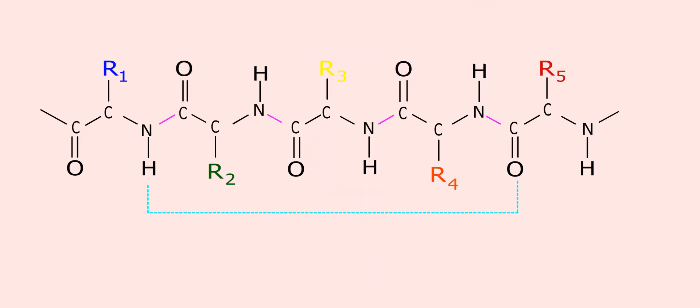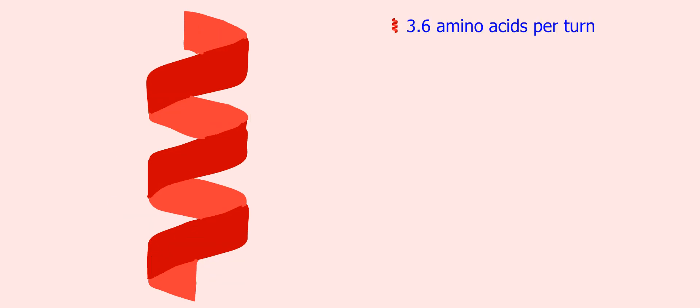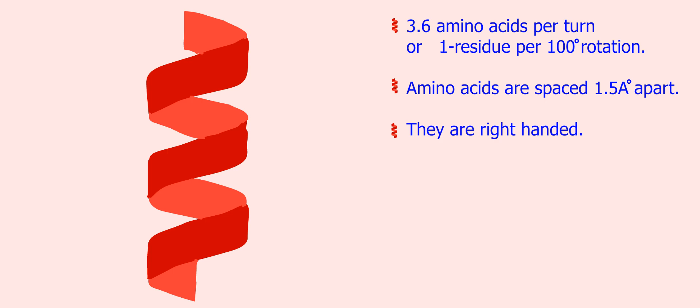Alpha helix. The alpha helix secondary structure is formed through hydrogen bonding. These hydrogen bonds connect the carbonyl oxygen of one amino acid residue to the nitrogen of a peptide bond four amino acids away. There are approximately 3.6 amino acids per turn in each alpha helix, or one residue per 100 degrees rotation. Amino acids are spaced 1.5 angstroms apart. Most all alpha helices are right-handed.